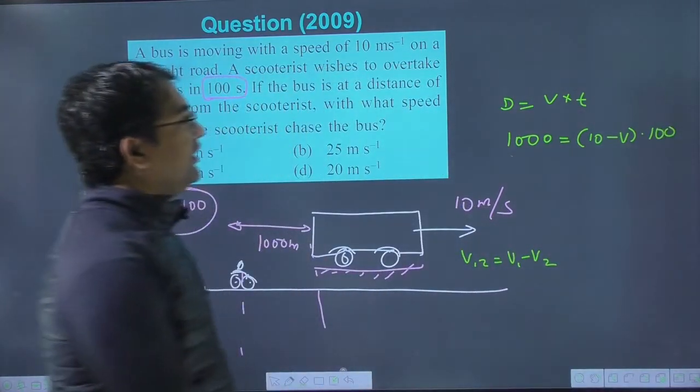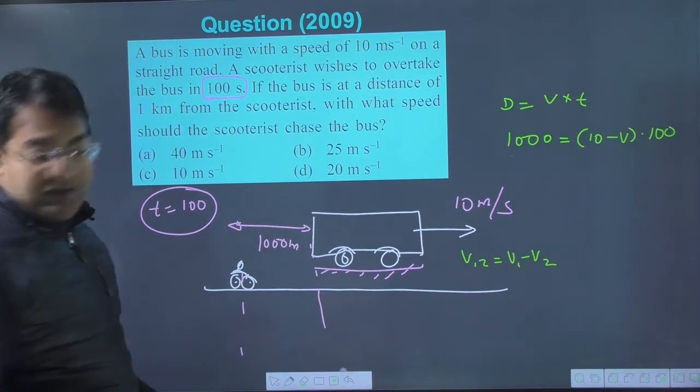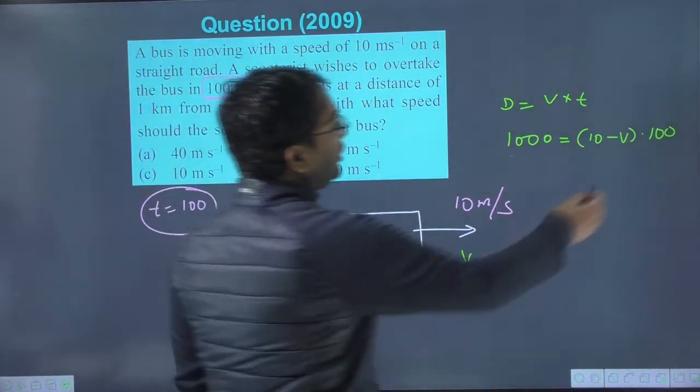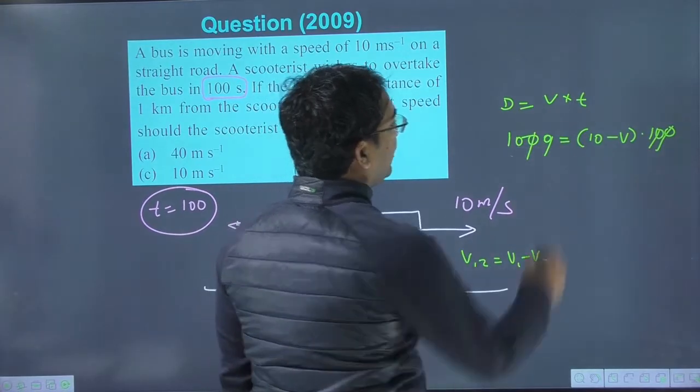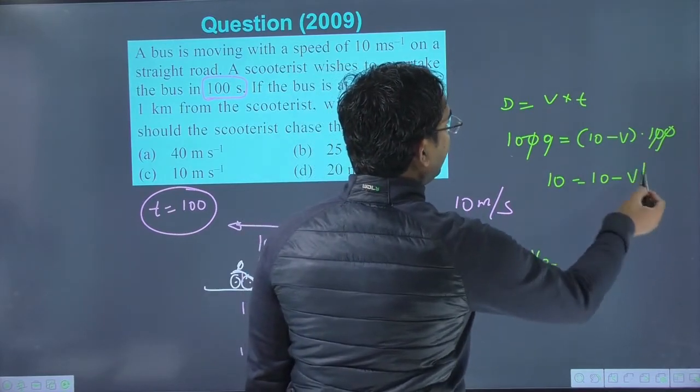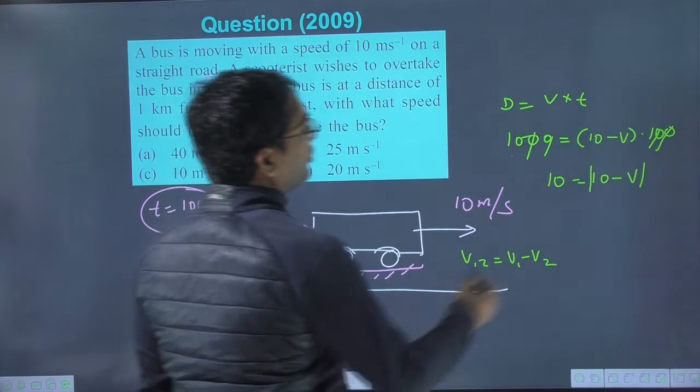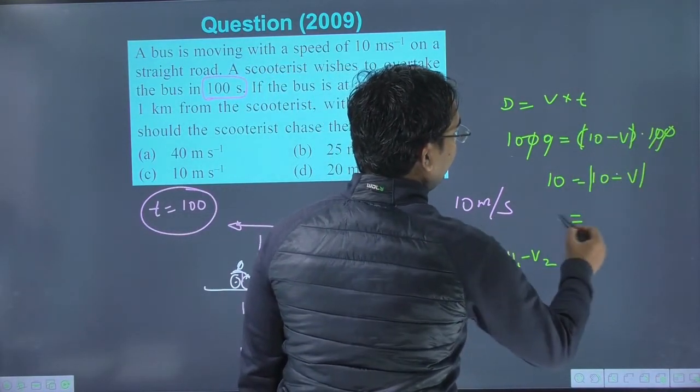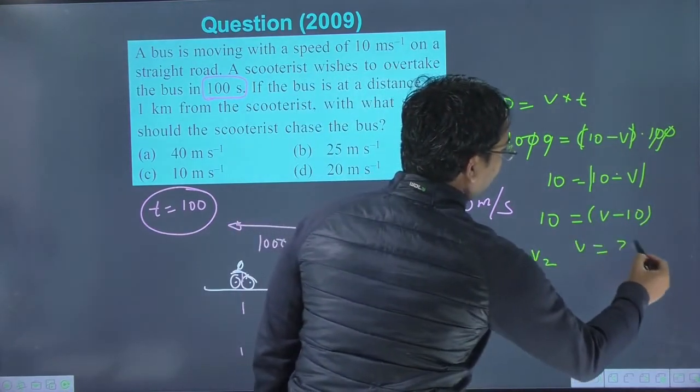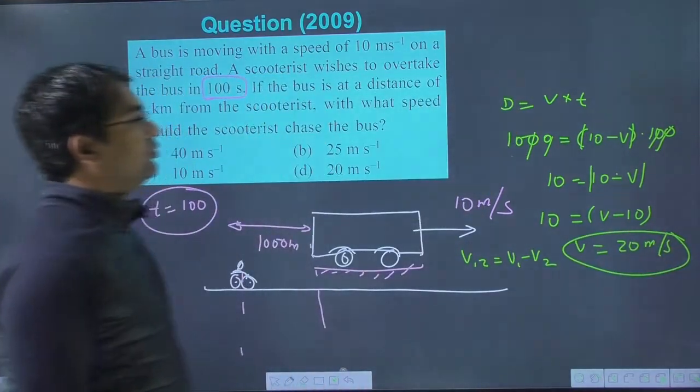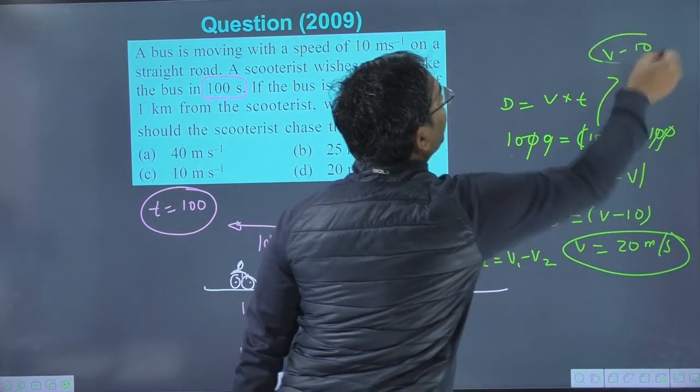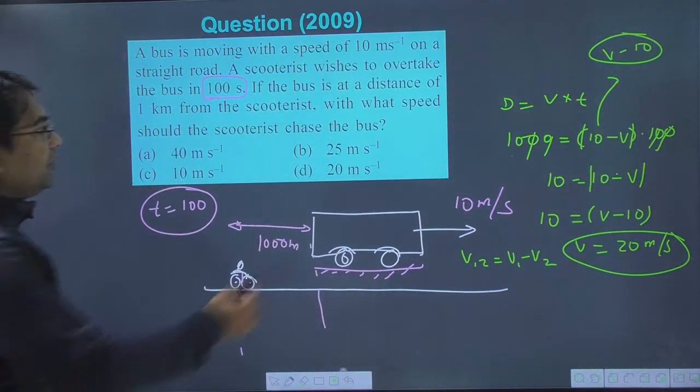This gives us 1000 equals 100 times (10 minus V), which simplifies to 10 equals 10 minus V, so V minus 10 equals minus 10, giving V equal to 20 meters per second.